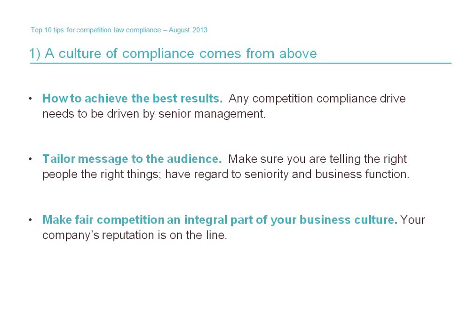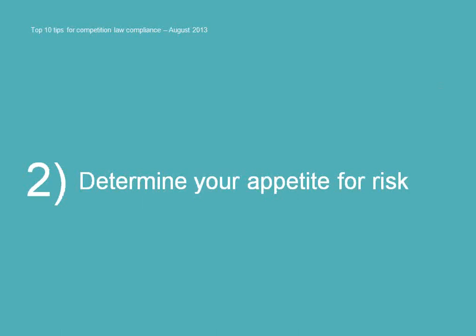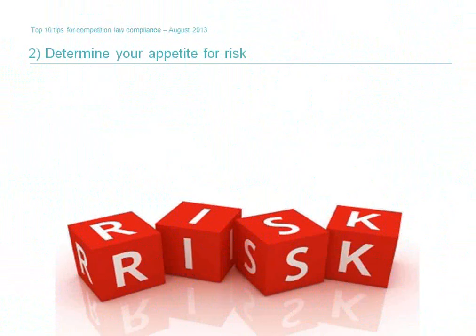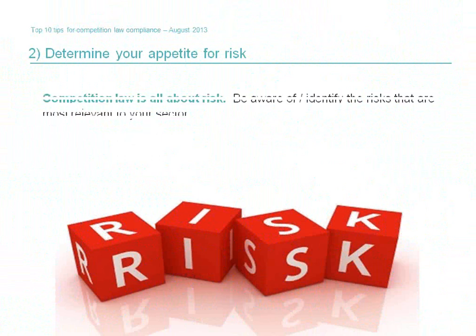Tip number two: determine your appetite for risk. Competition compliance is fundamentally a question of risk. First, there is the risk that any relevant conduct will be held to infringe the substantive and procedural competition rules — often something which is difficult to determine for sure, given that much can depend on complex legal and economic analyses. Second, there is the procedural risk that you'll get involved in an authority investigation, either initiated by the authority or following a complaint by a disgruntled third party.